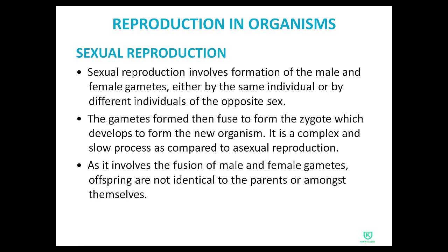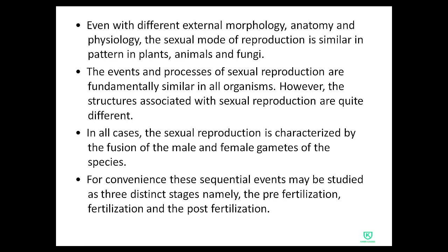As it involves the fusion of male and female gametes, offspring are not identical to the parents or amongst themselves. The sexual reproduction is similar in patterns in plants, animals and fungi. In terms of morphology — which is physical or internal appearance — plants, animals and fungi are different from one another.